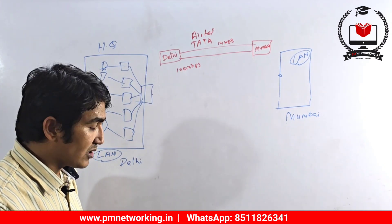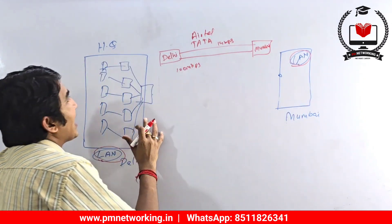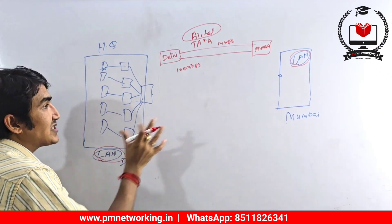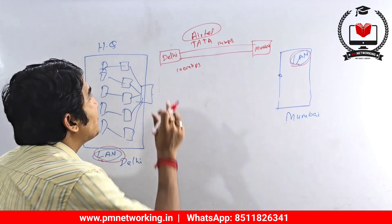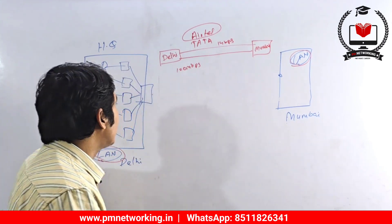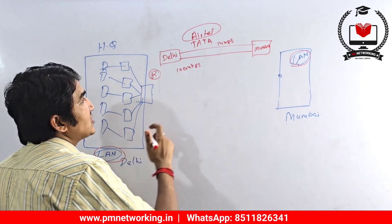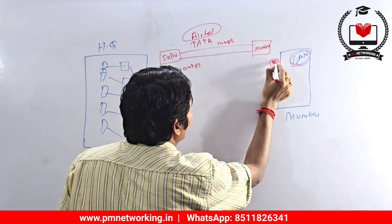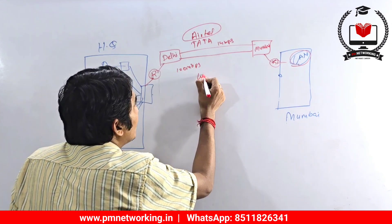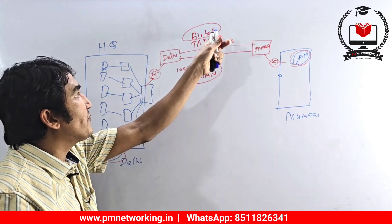This is my LAN Local Area Network — this is also my LAN — and to connect these two LANs together I am going to use Airtel as the service provider, so this type of network is known as WAN. To connect different networks together, we need a router. I will place one router at both branches, and with the help of routers I can connect these two company networks together — this network will be known as WAN.